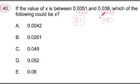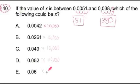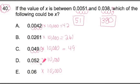So now I'm dealing with 51 and 380. Let's do the same thing for all the answer choices. I'm multiplying by ten thousand, which is moving the decimal over four spaces. We'll have values that are more manageable to work with. This becomes 42. This one becomes 261. This one becomes 490. This one is 520. And this one becomes 600.